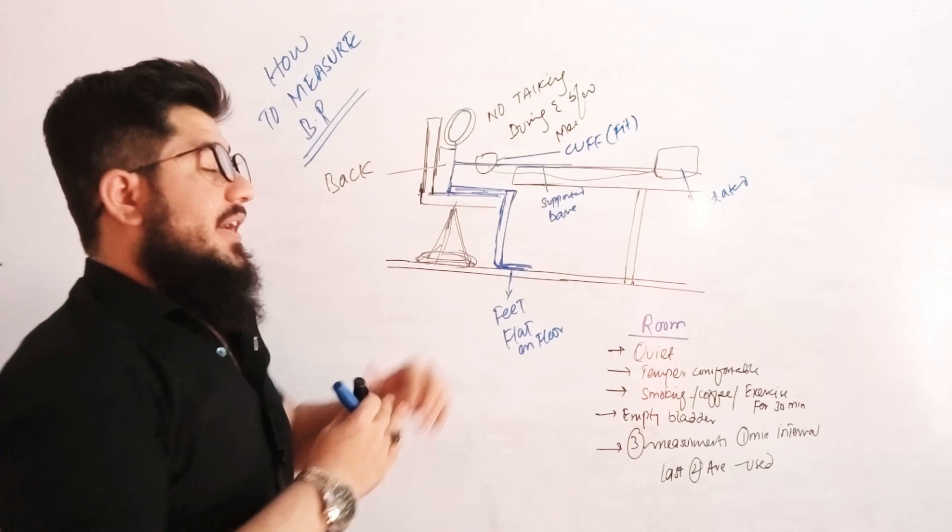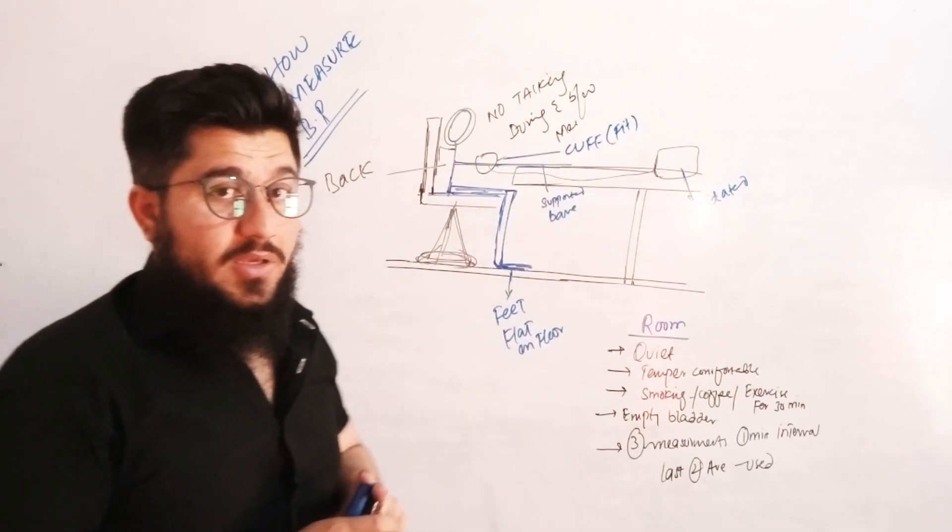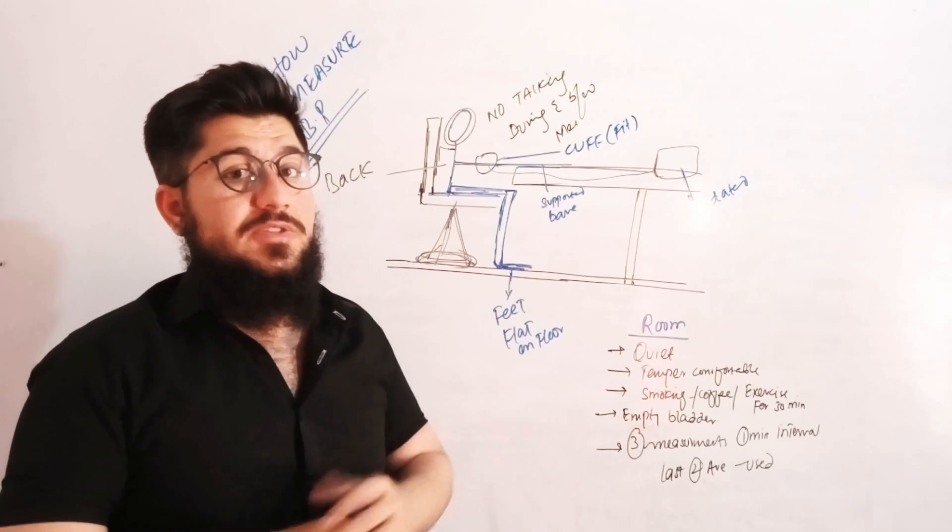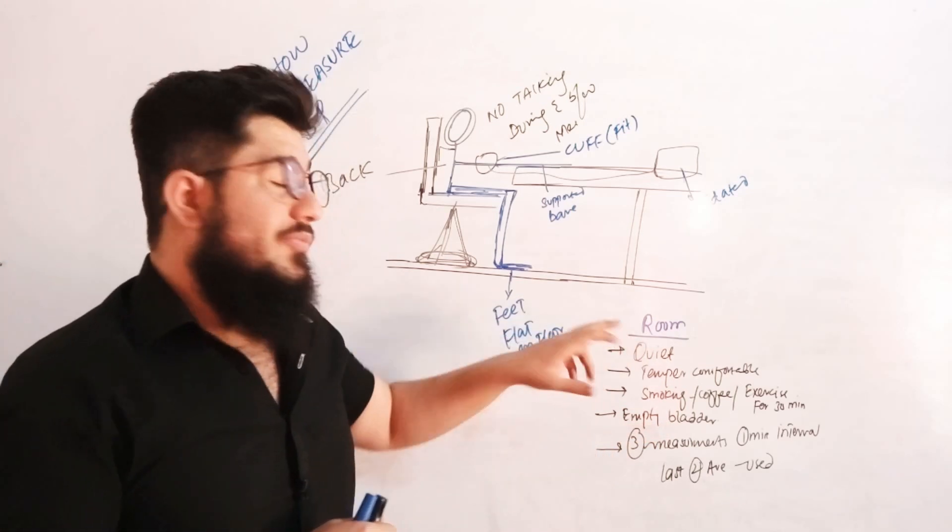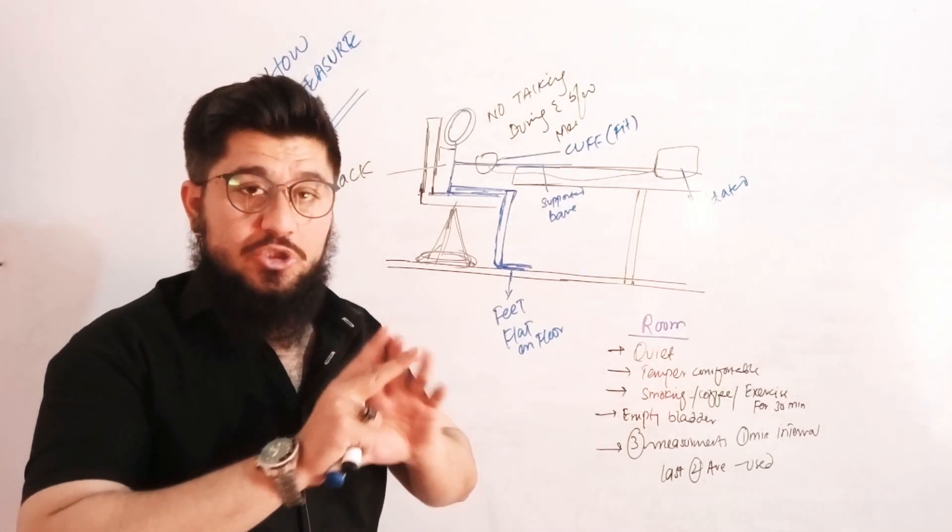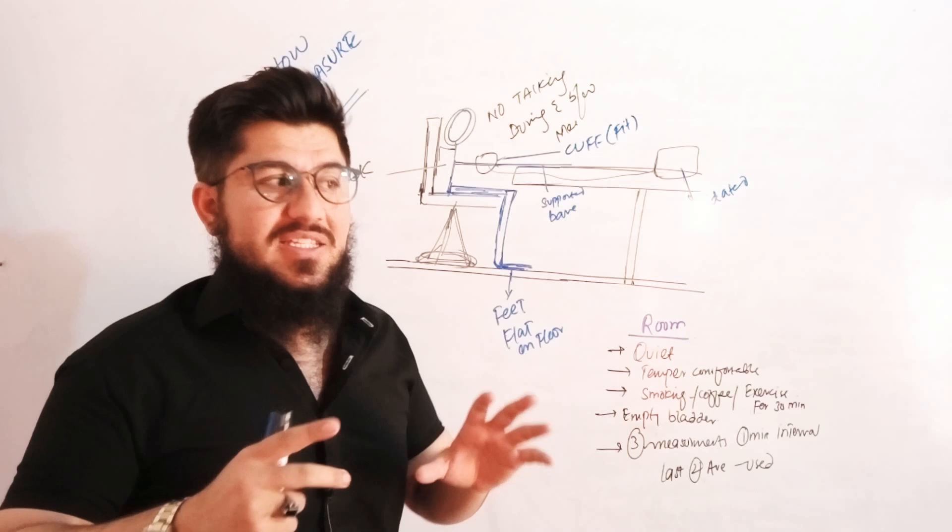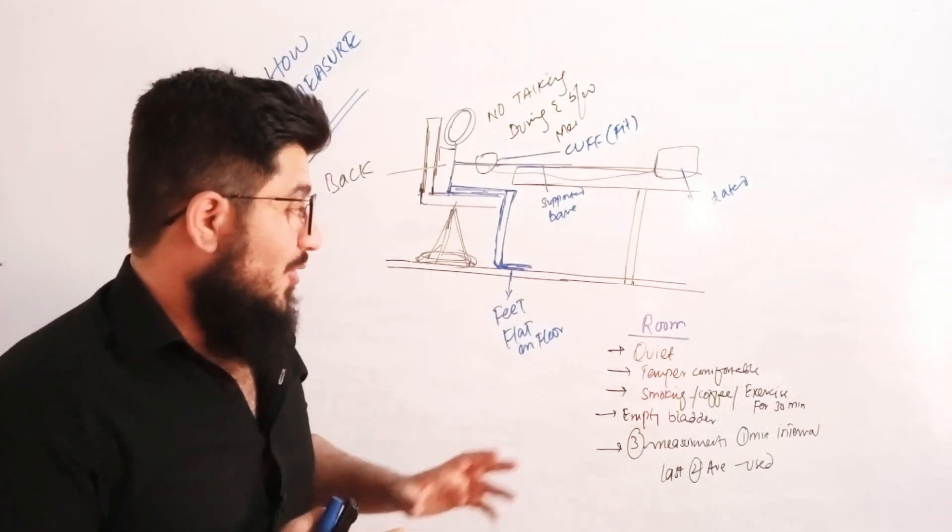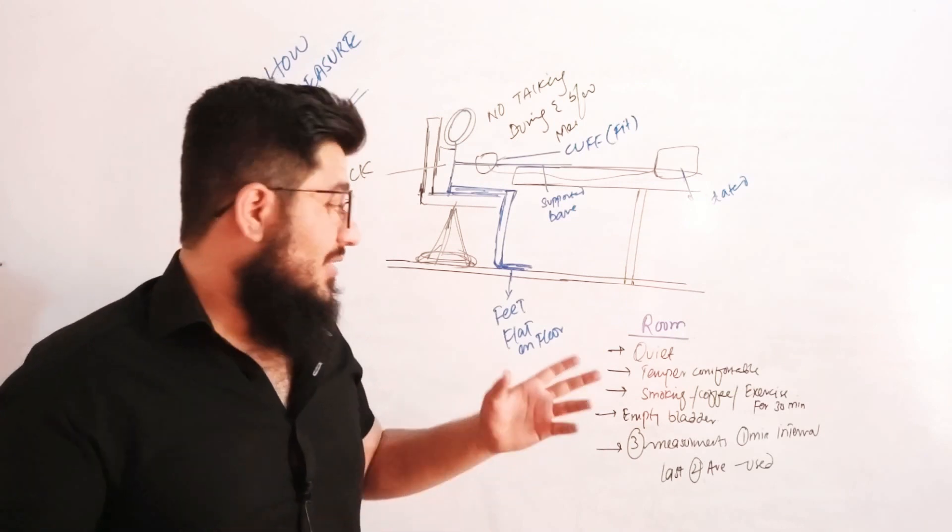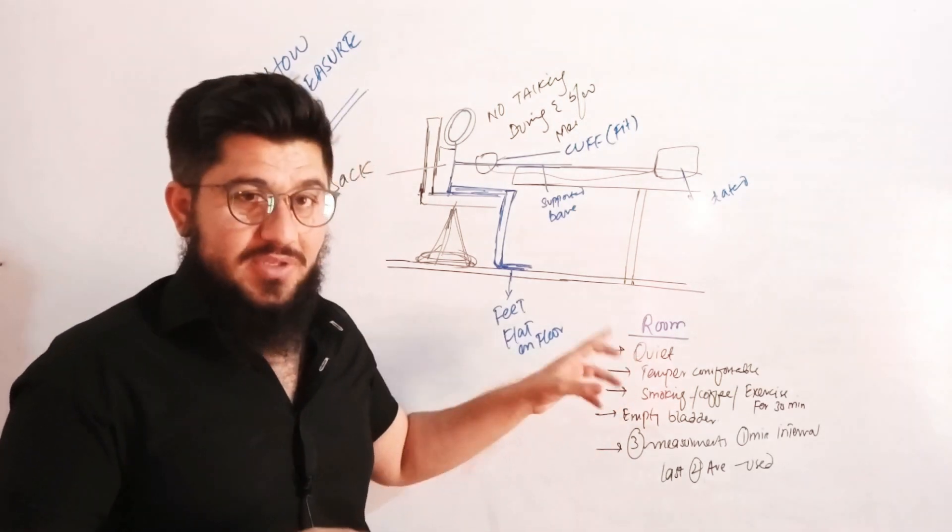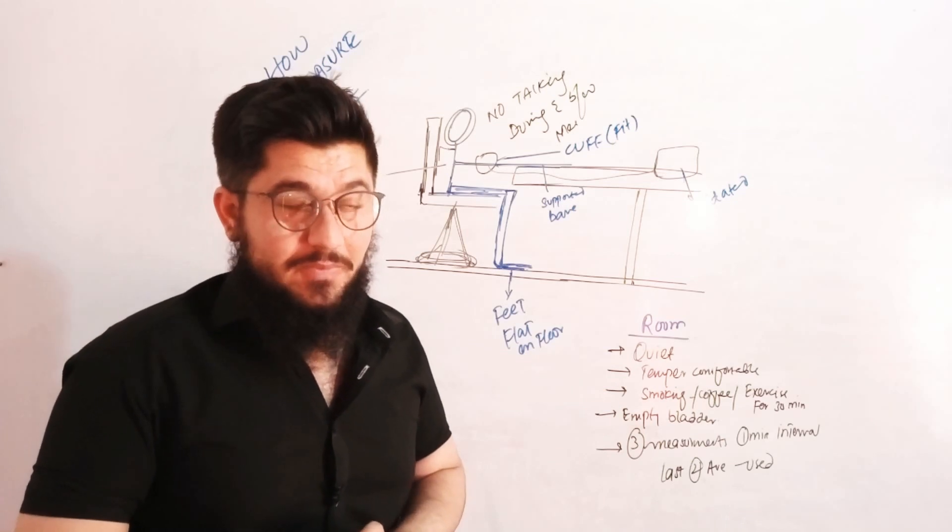Now let's come to the room where the blood pressure measurement takes place. That room must be quiet with no noise coming from outside. Ideally, a soundproof room should be there, though such practice is not available in multiple places. Temperature must be comfortable, neither too hot nor too cold.